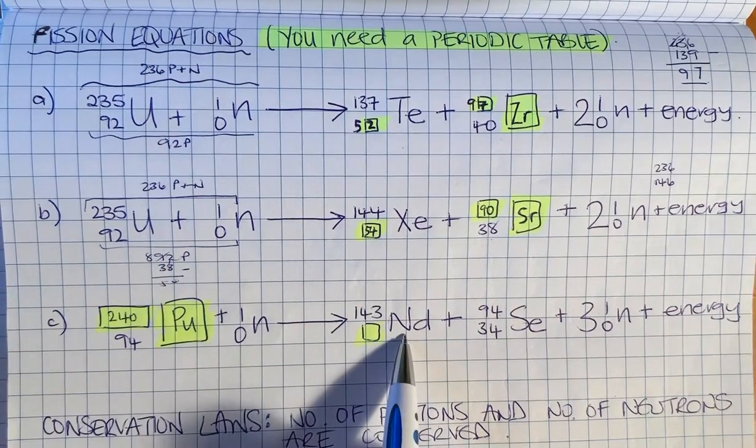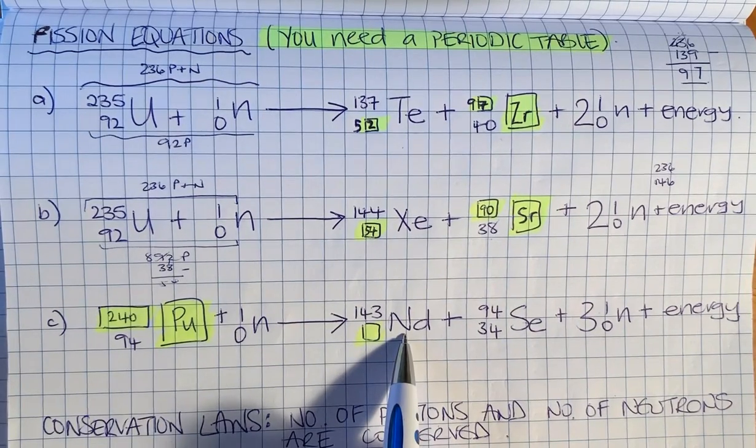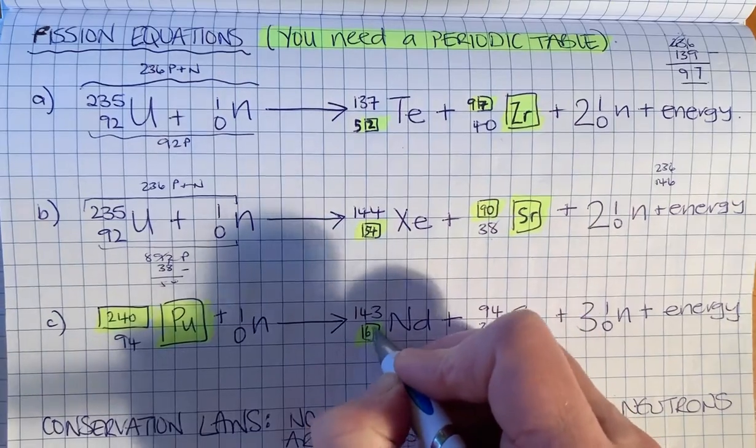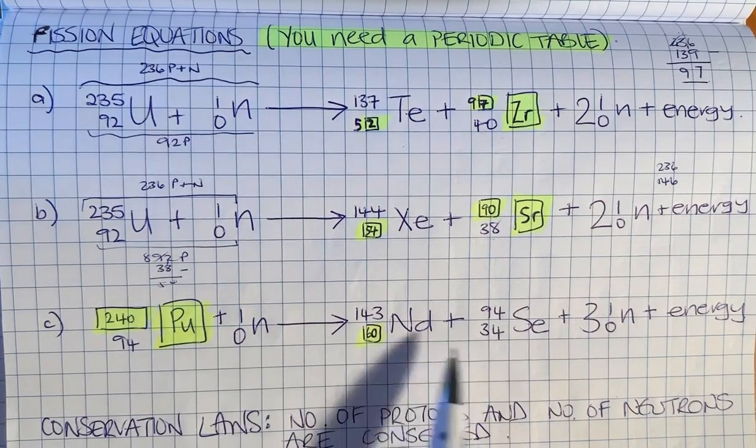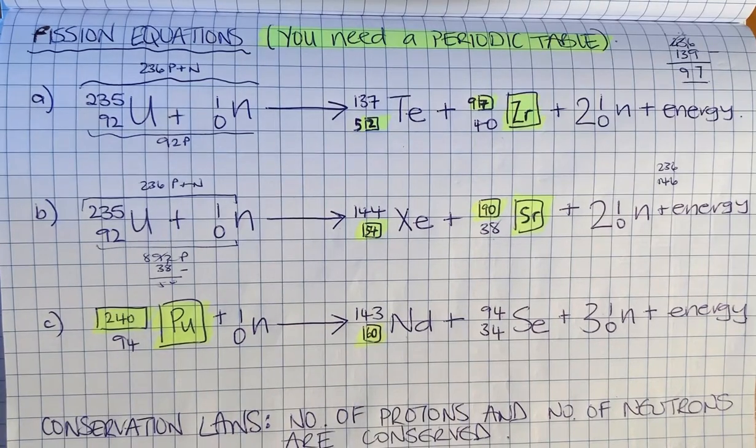This is neodymium. Neodymium on the periodic table is 60th, so it's got 60 protons. Hopefully 60 and 34 make 94, which they do.